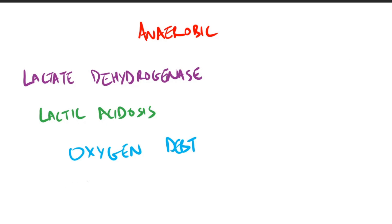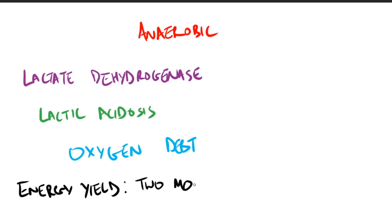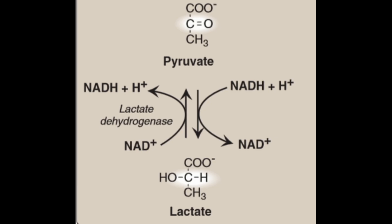What is important in biochemistry is the energy yield. You need to know that two molecules of ATP are generated for each molecule of glucose converted to two molecules of lactate. Here you can see the reaction of pyruvate going into lactate by the enzyme lactate dehydrogenase using NADH.